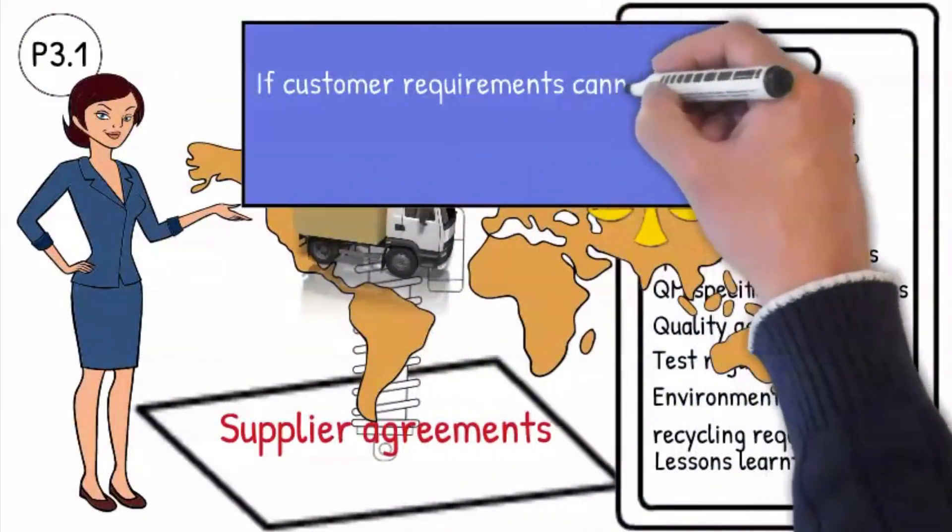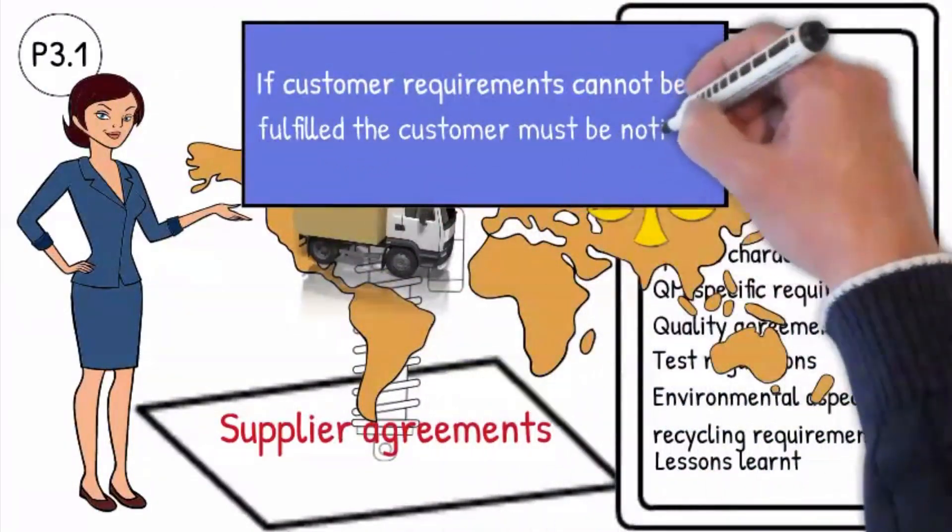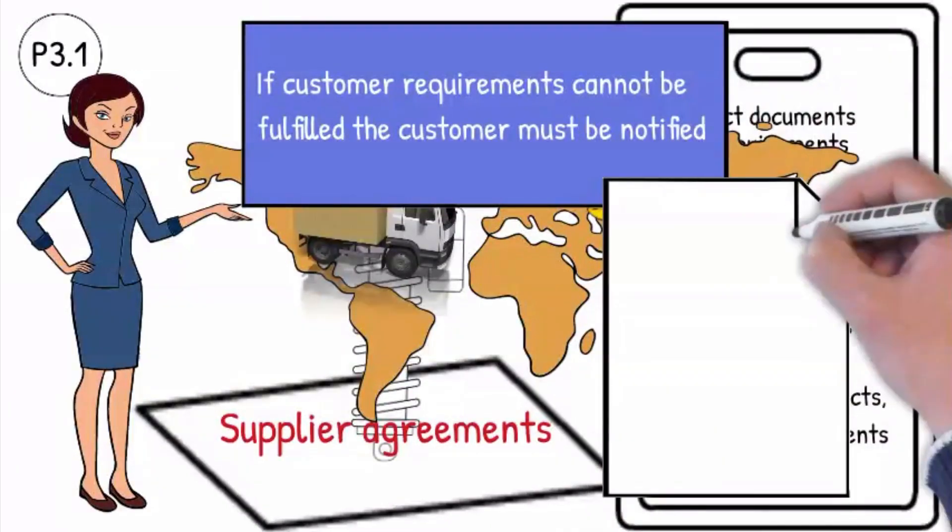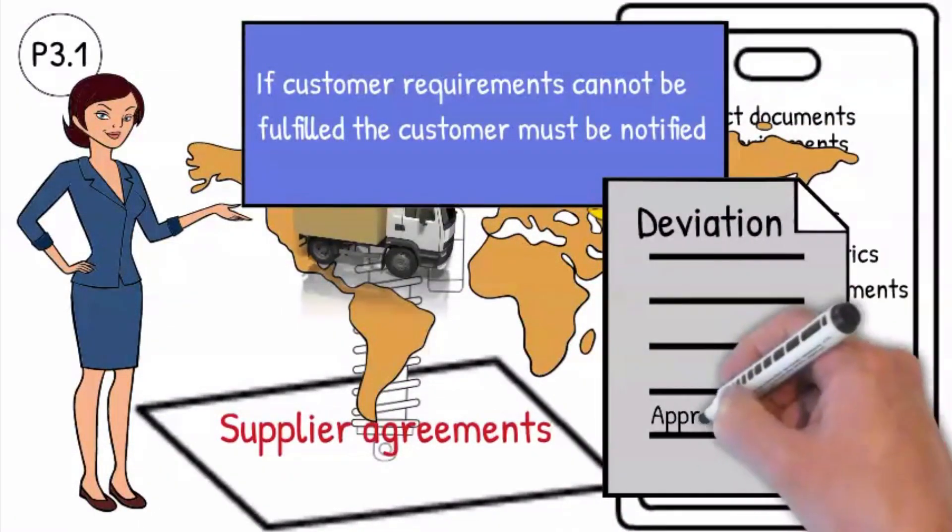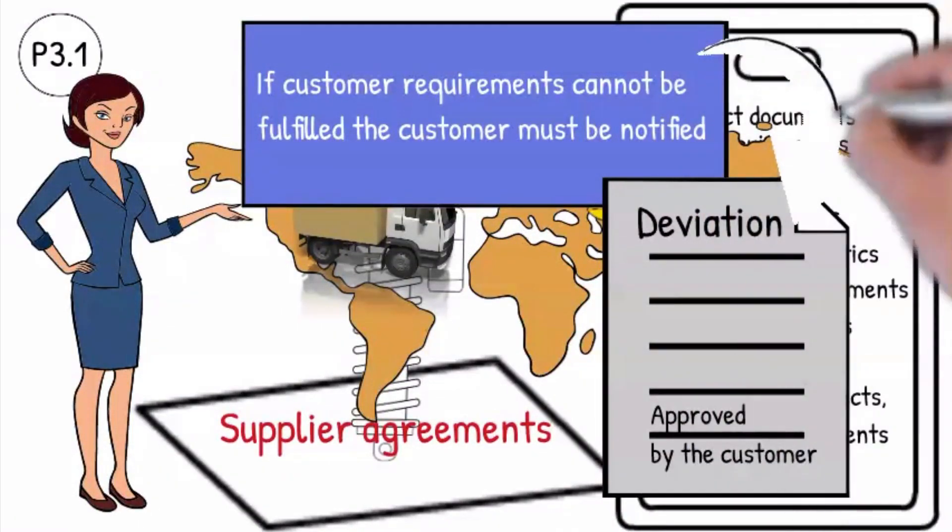If requirements cannot be fulfilled, the customer must be notified and the organization must submit a written deviation to the customer for approval.